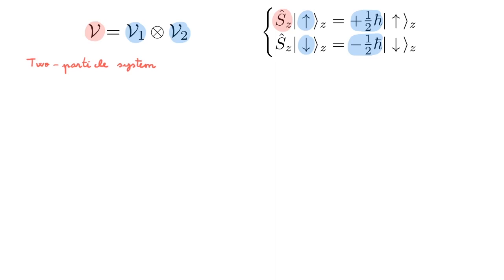The state space of the second particle is the same and we form the combined state space by the tensor product here. The tensor product state space V has dimension 4. We can construct a basis for it by calculating the tensor products of the basis state of the individual state spaces and we get these four basis states here.